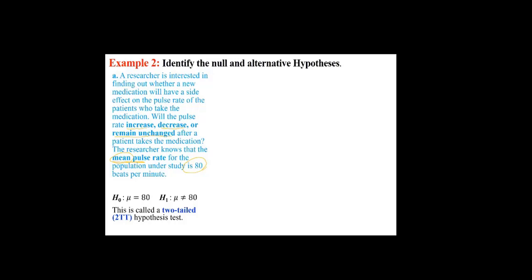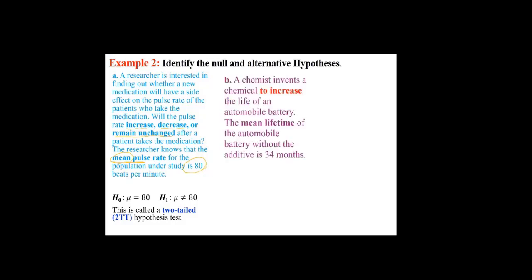A chemist invents a chemical to increase the life of an automobile battery. The mean lifetime without the additive is 34 months, so H₀: μ = 34. Re-reading the question — the chemist wants to increase the battery life — that means greater than 34. So H₁: μ > 34. It's a right-tail test. Read and re-read the question, making sure to use proper notation.